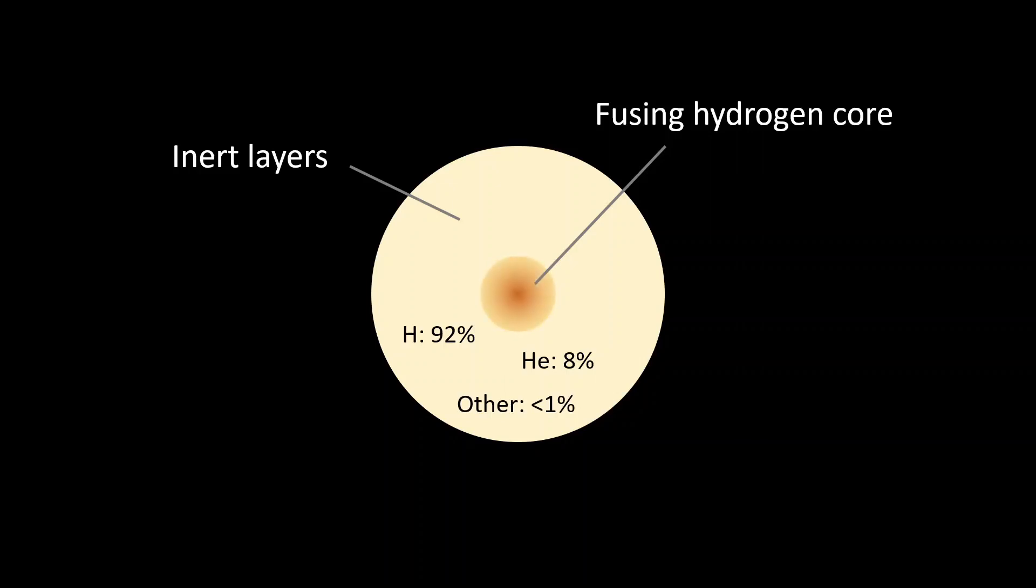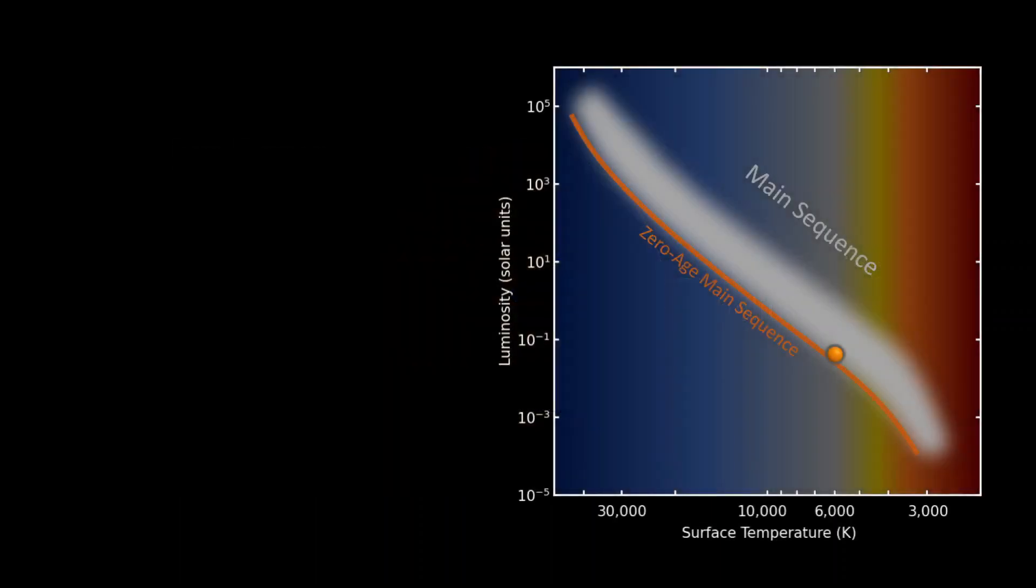Theoretical models show that the change in composition of the stellar core has an impact on the whole structure of the star. As helium accumulates in the inner region, the temperature rises, and this increases the rate of nuclear reactions and the luminosity of the star. As those changes take place, the stars move away from the zero-age main sequence to a slightly higher location in the HR diagram.